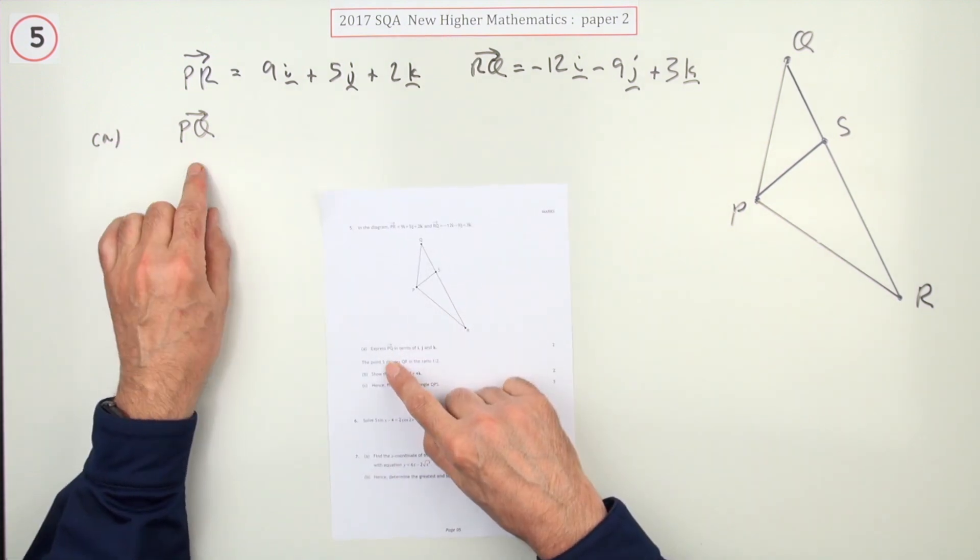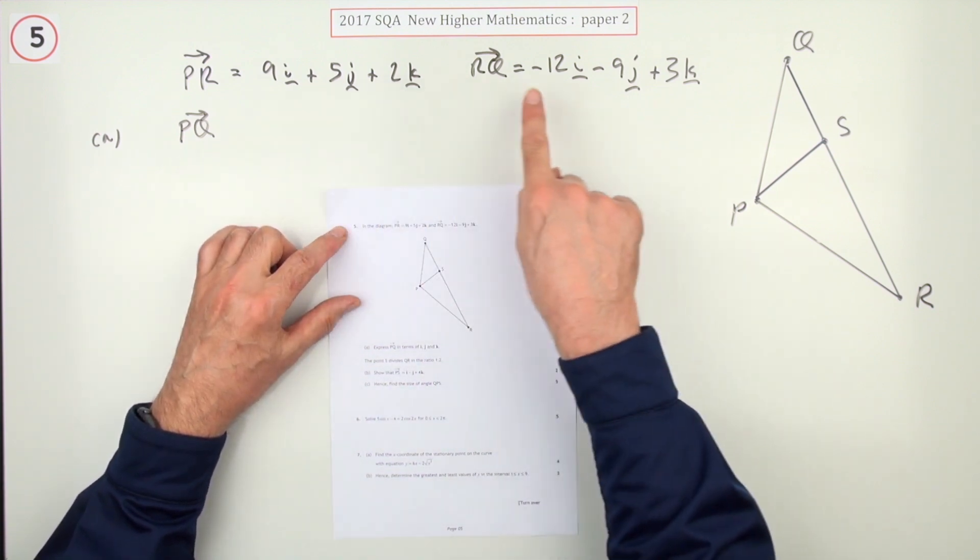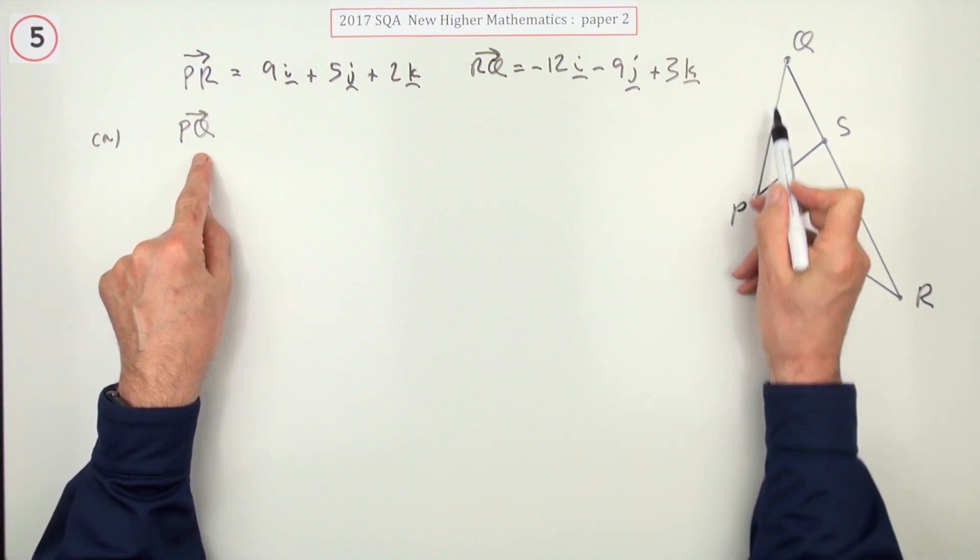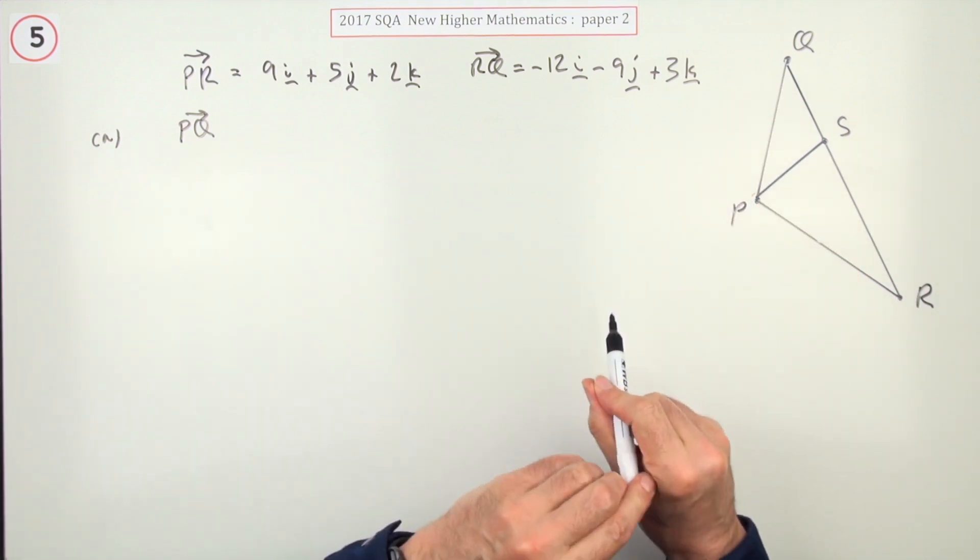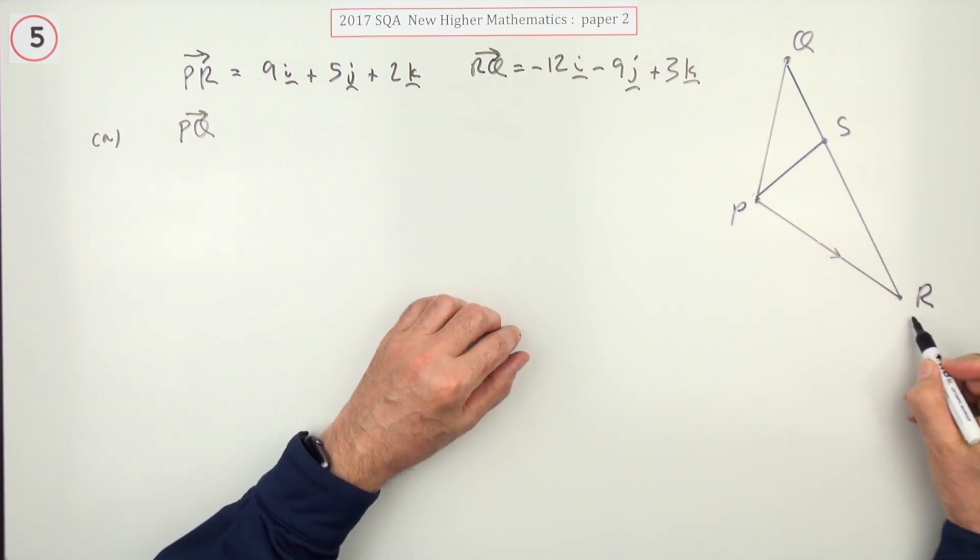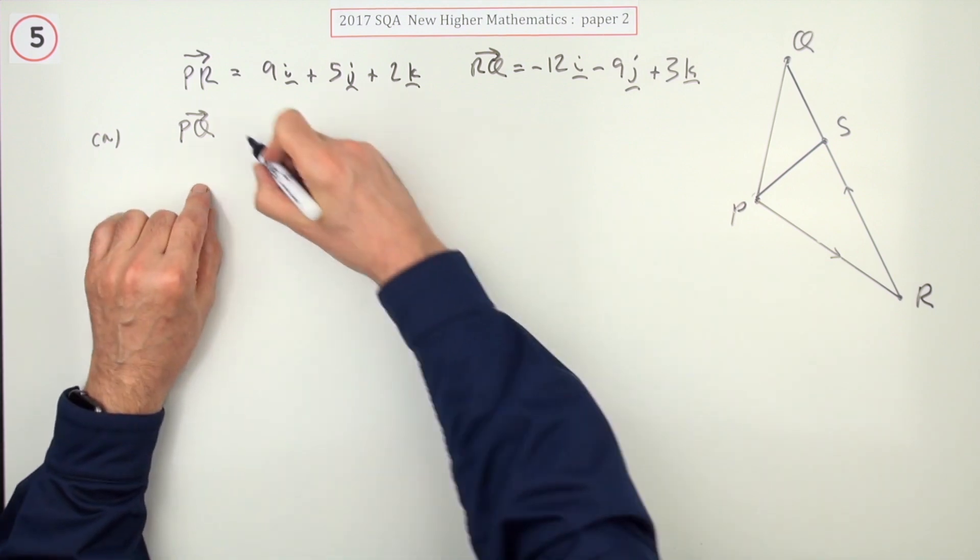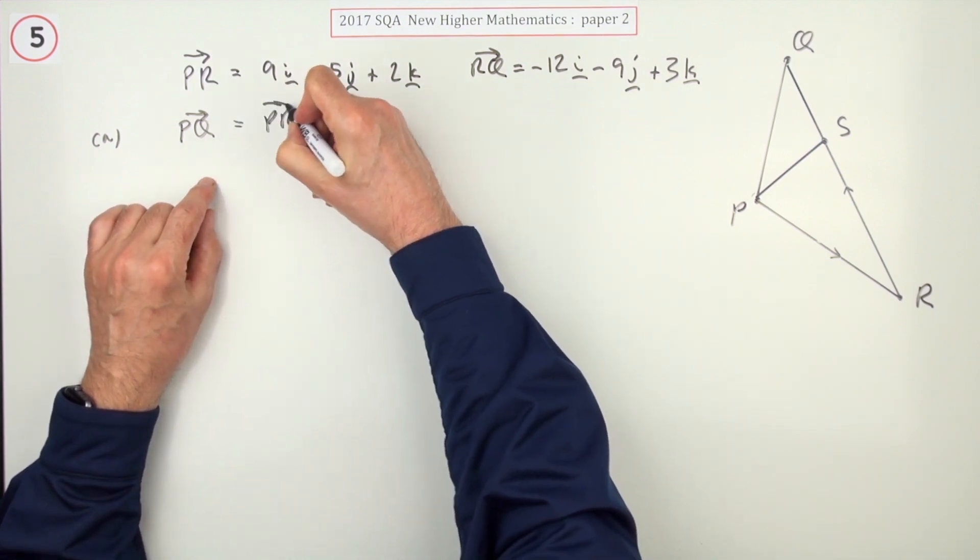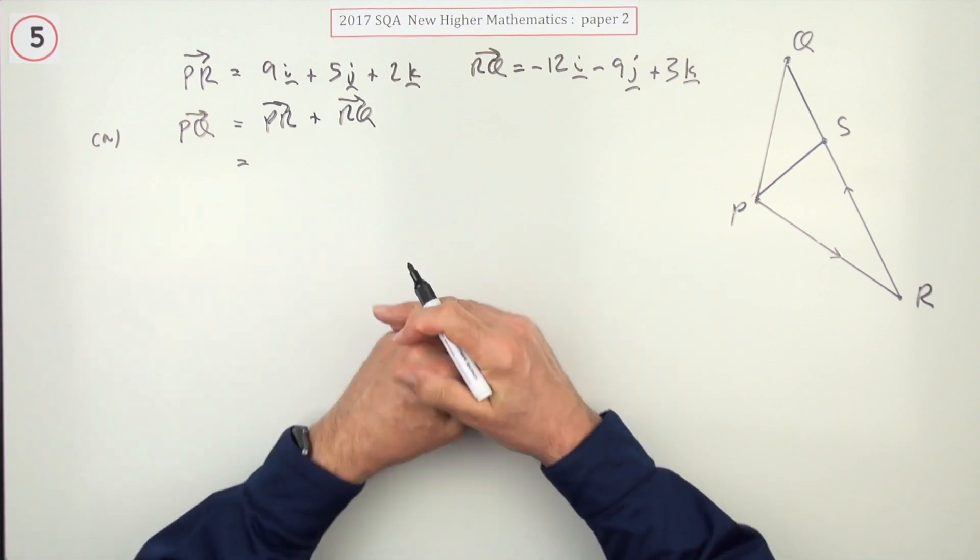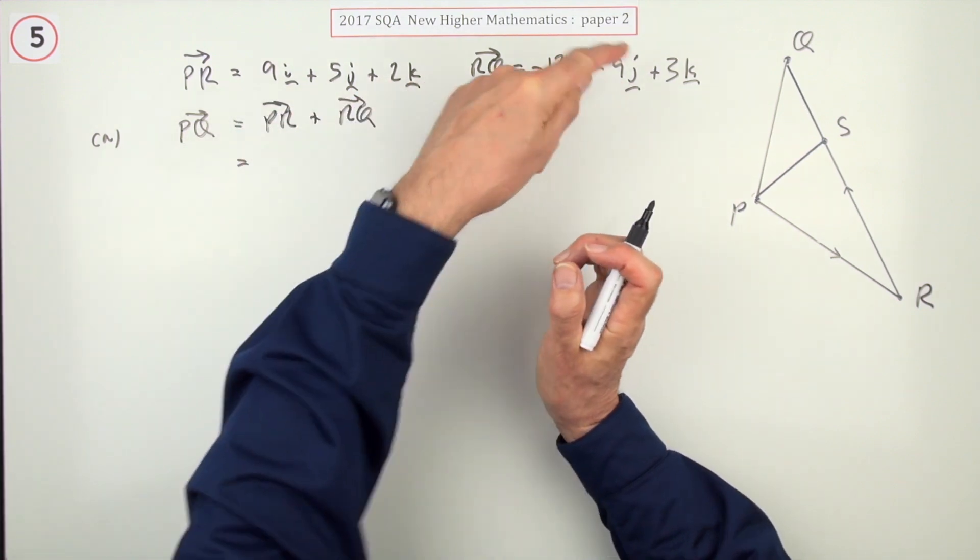What does it say? Express PQ in terms of i, j, and k. In other words, write it out this way. Well, how do you get from P to Q? To go from P to Q, you've got to go from P to R and then from R to Q. So it's P to R and then it's R to Q.